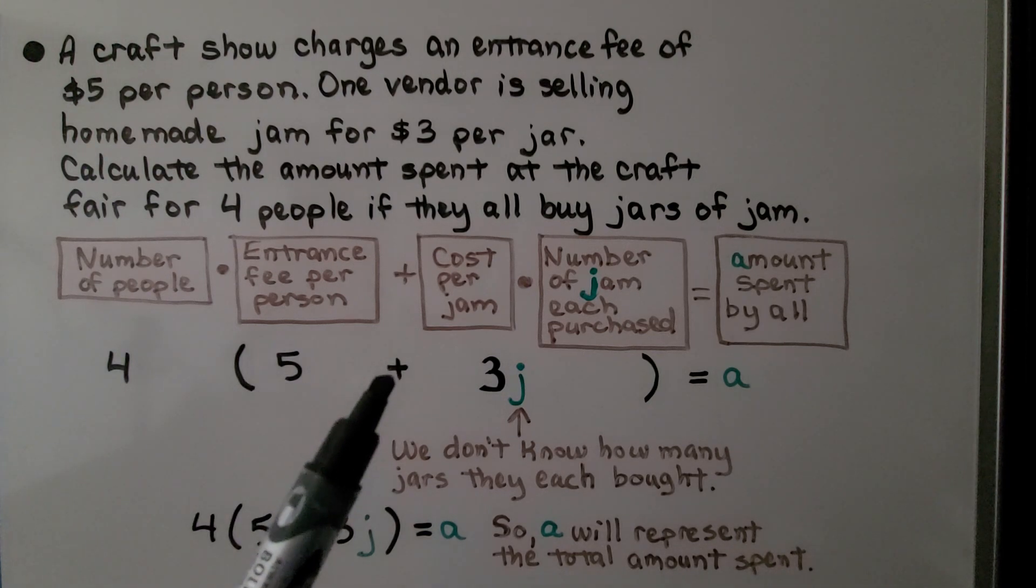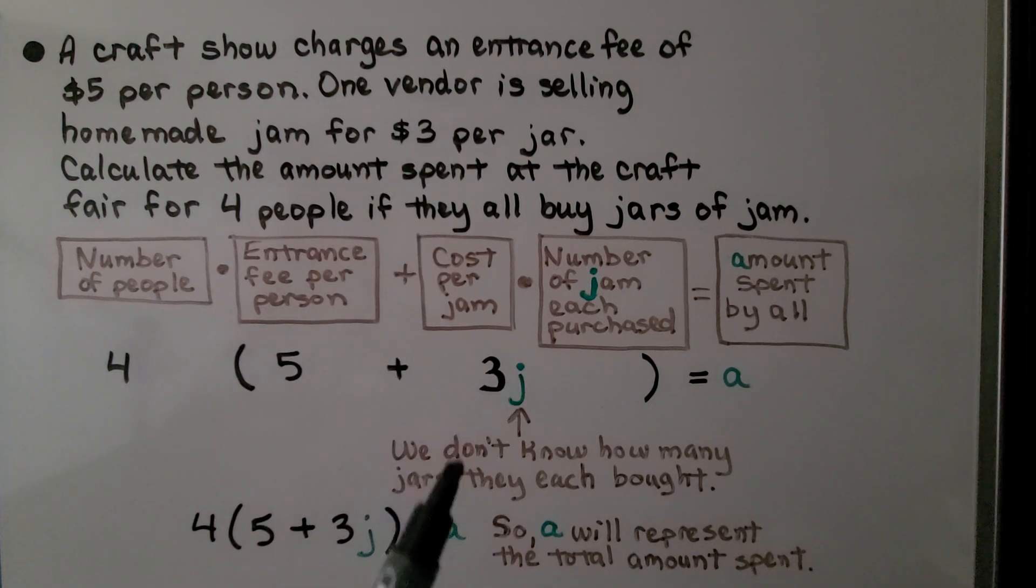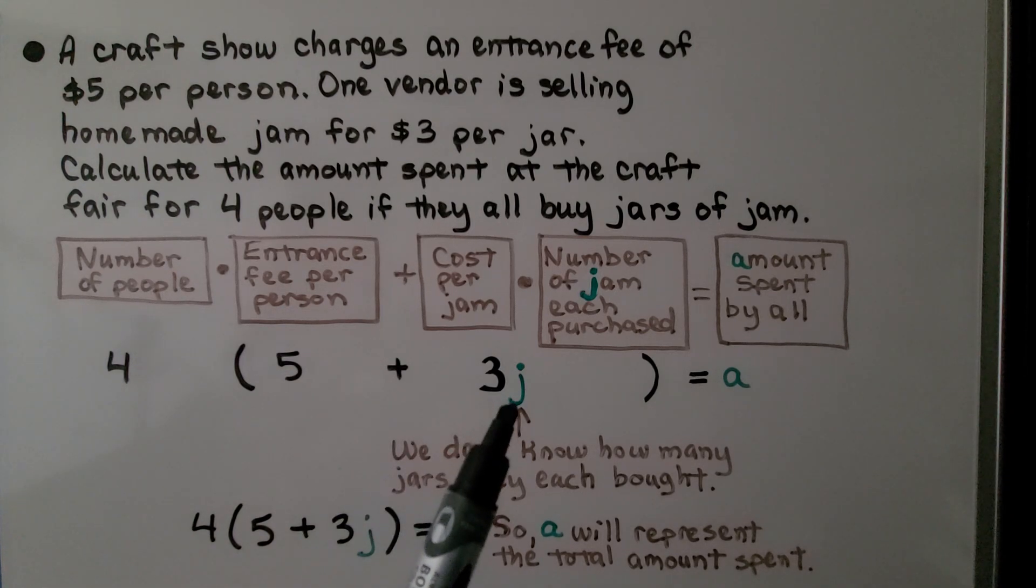...plus the cost per jam, the $3 each, the number of jam each purchased. We don't know how many jars they each bought, so we're just going to have J for jam.